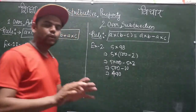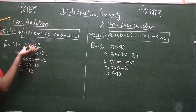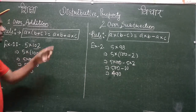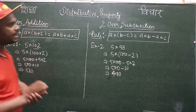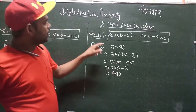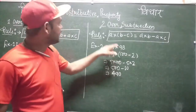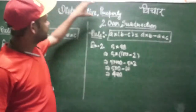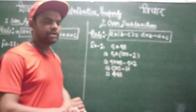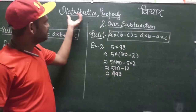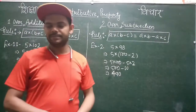So in this video, we calculated 5 × 102 with the help of the distributive property over addition, and 5 × 98 with the help of the distributive property over subtraction. It was a video on the distributive property over both addition and subtraction.